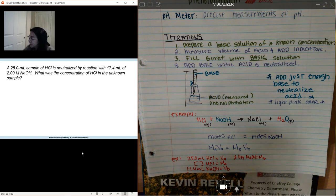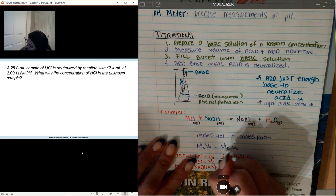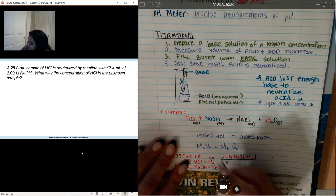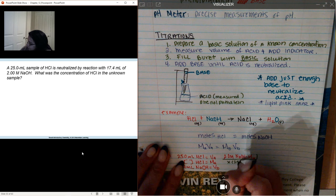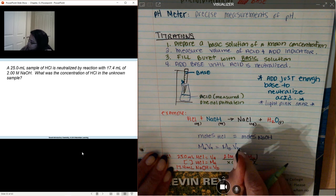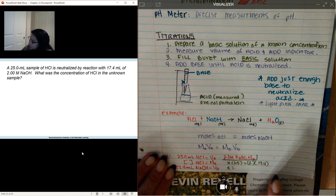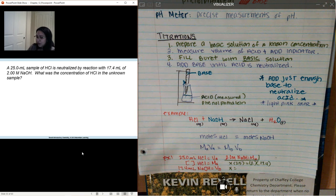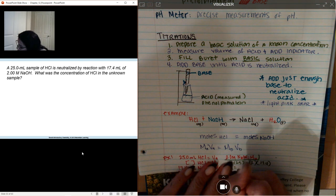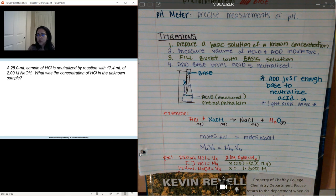Using MA × VA = MB × VB: MA is unknown (X), volume of A is 25, equals concentration of base (2) times volume of base (17.4). So X equals 17.4 times 2 divided by 25, which gives us 1.392 molarity.